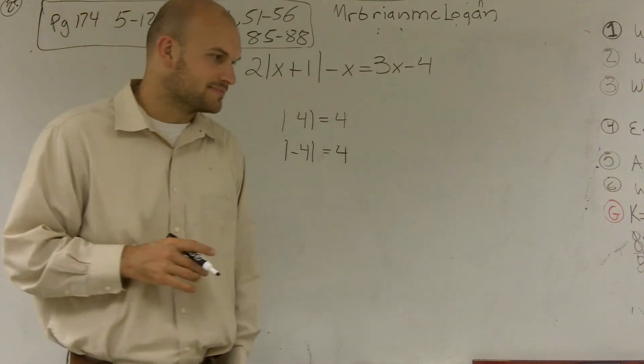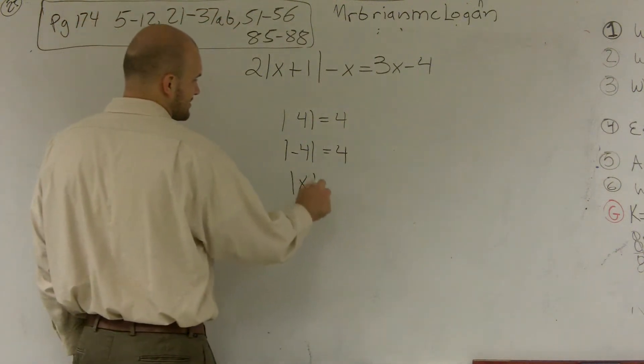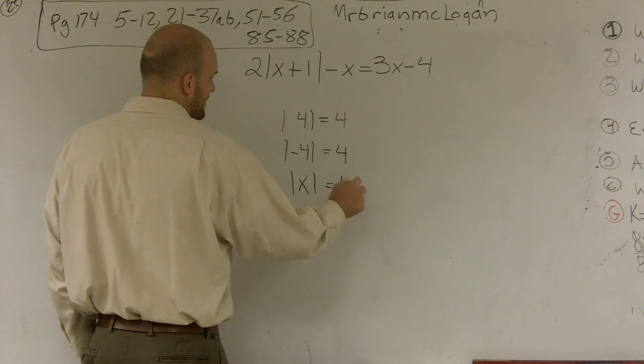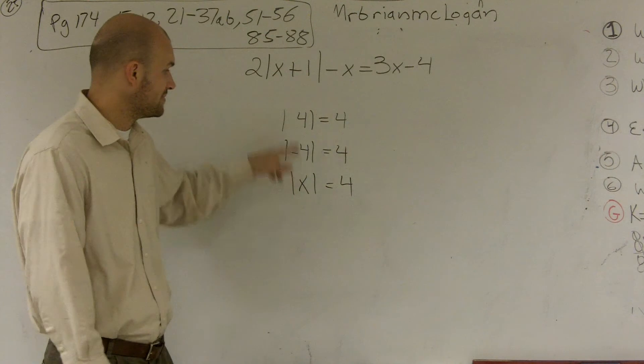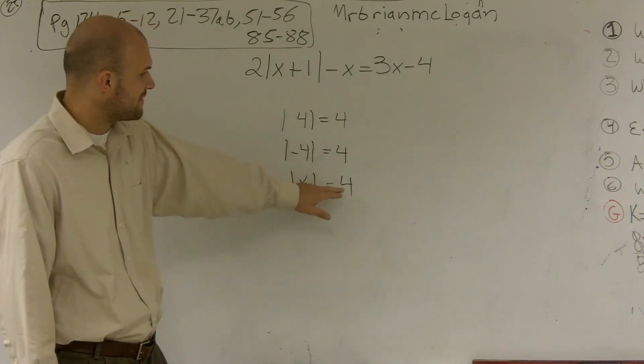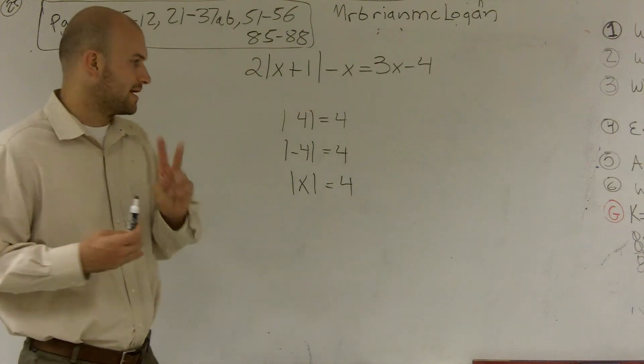And if I was going to say the absolute value of x, if I was saying my value is 4, well, you don't know if x is positive or you don't know if x is negative, right? It could have been either one of those. So what we're going to do is we're going to find both of them.